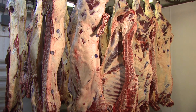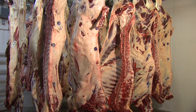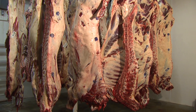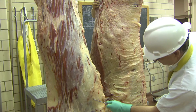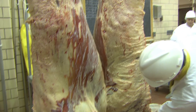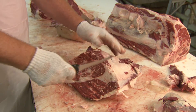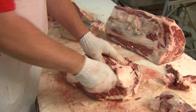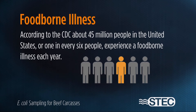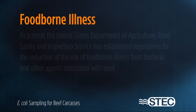Assuring food safety is critical for all beef slaughter and processing operations. Food safety control and process management is necessary for beef processors to reduce the risk of foodborne illness from their products. According to the CDC, about 45 million people in the United States, or one in every six people, experience a foodborne illness each year.